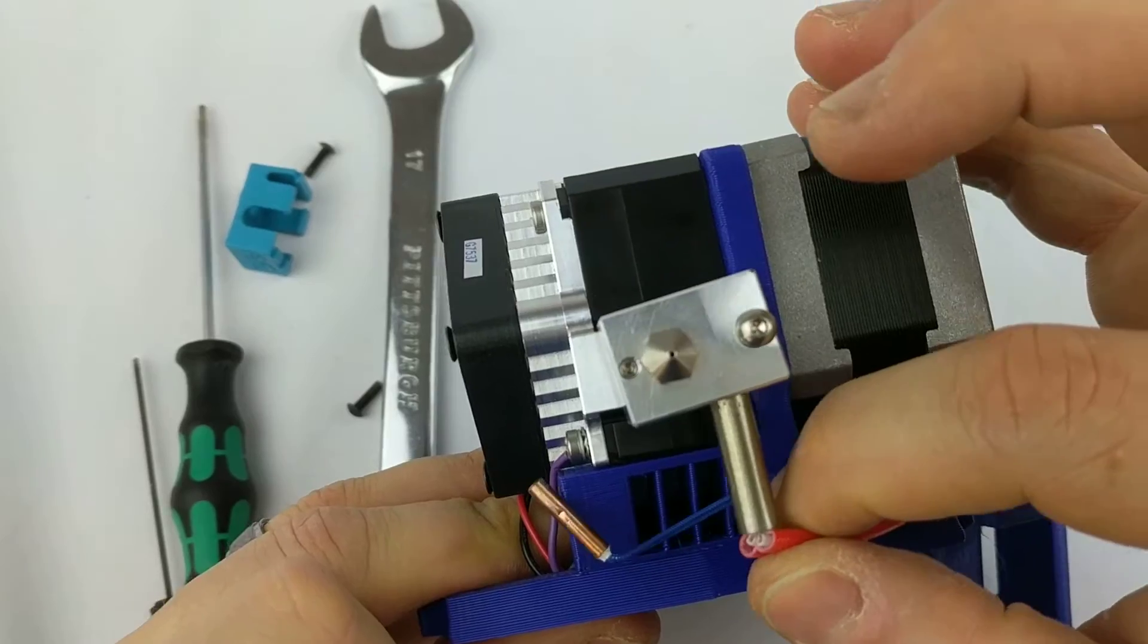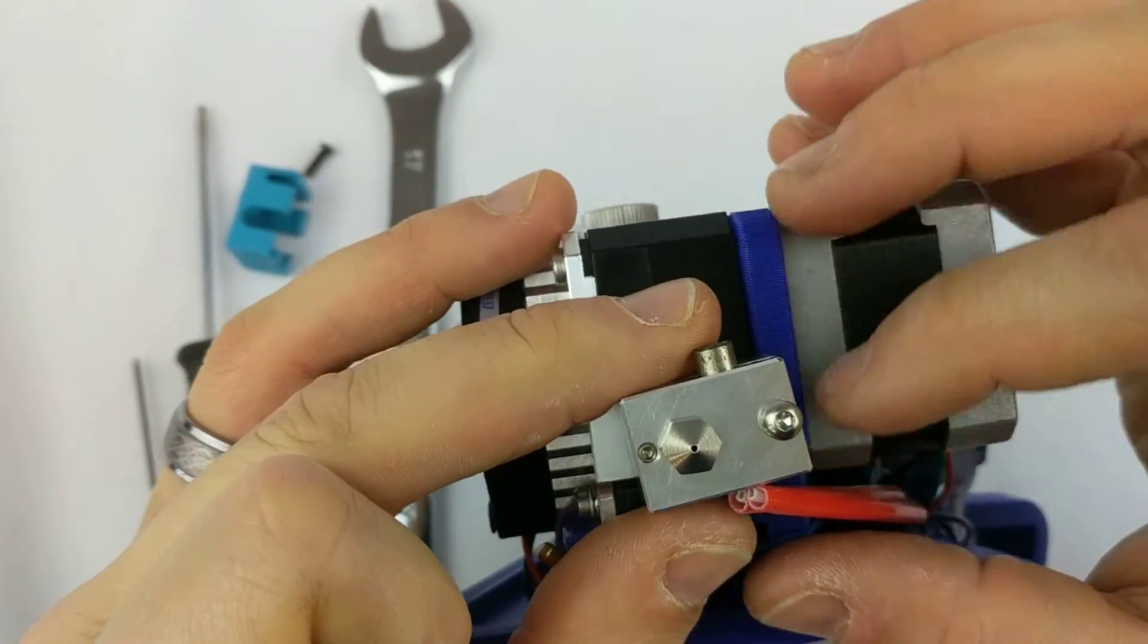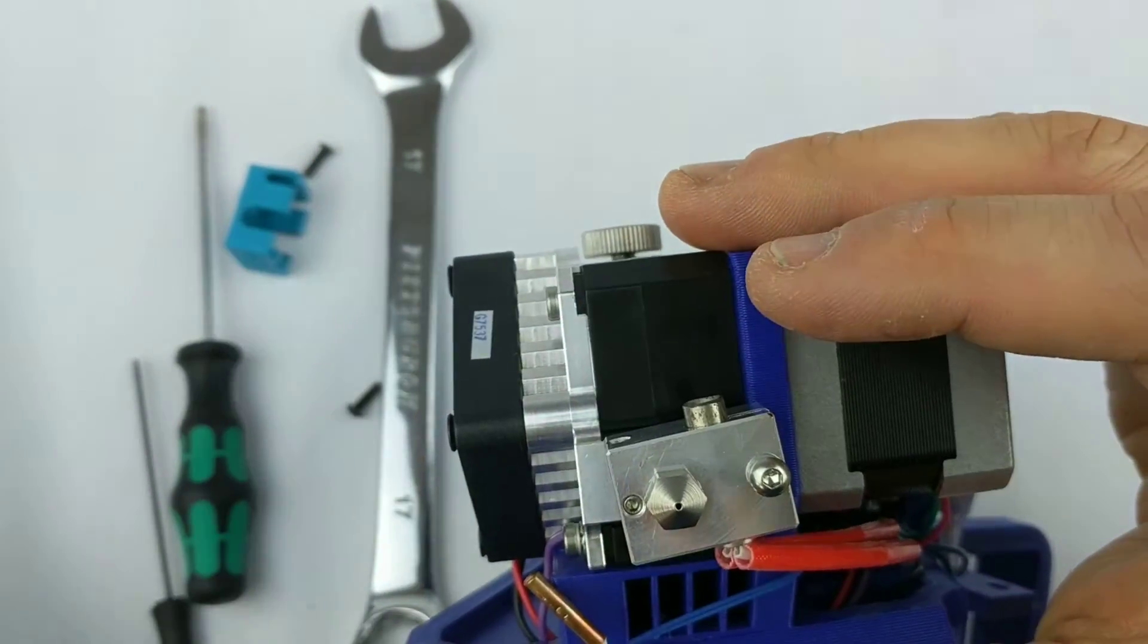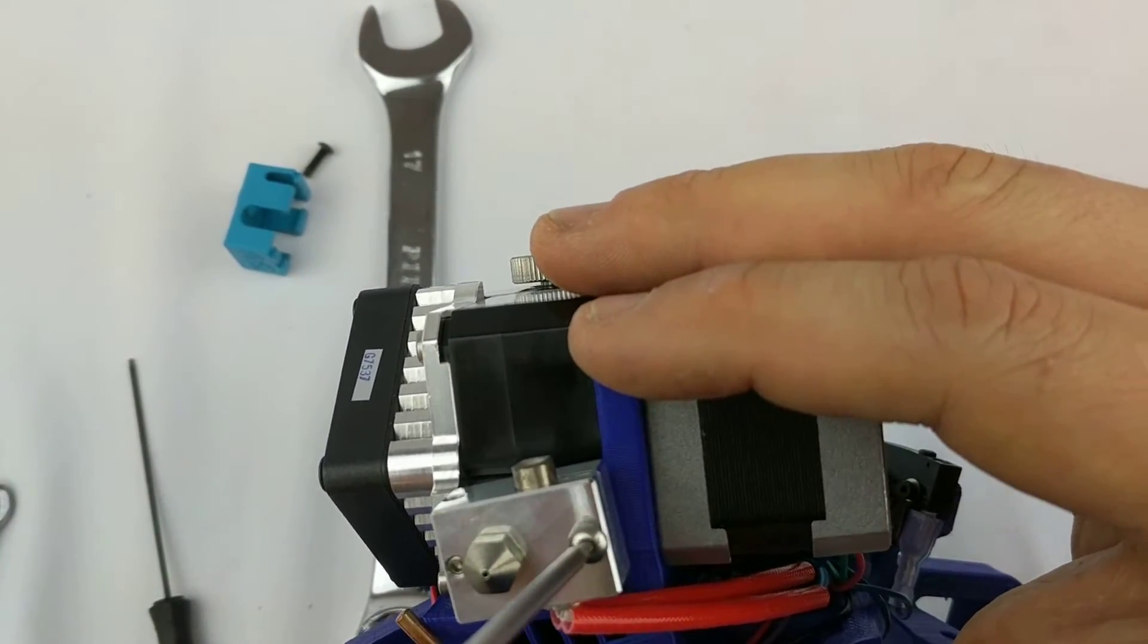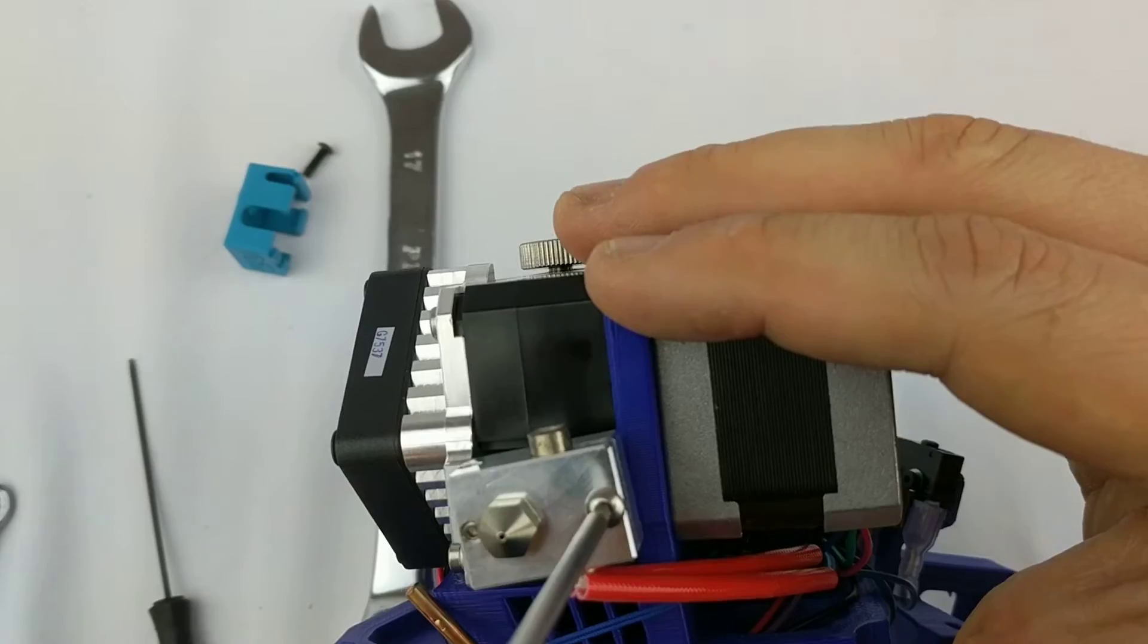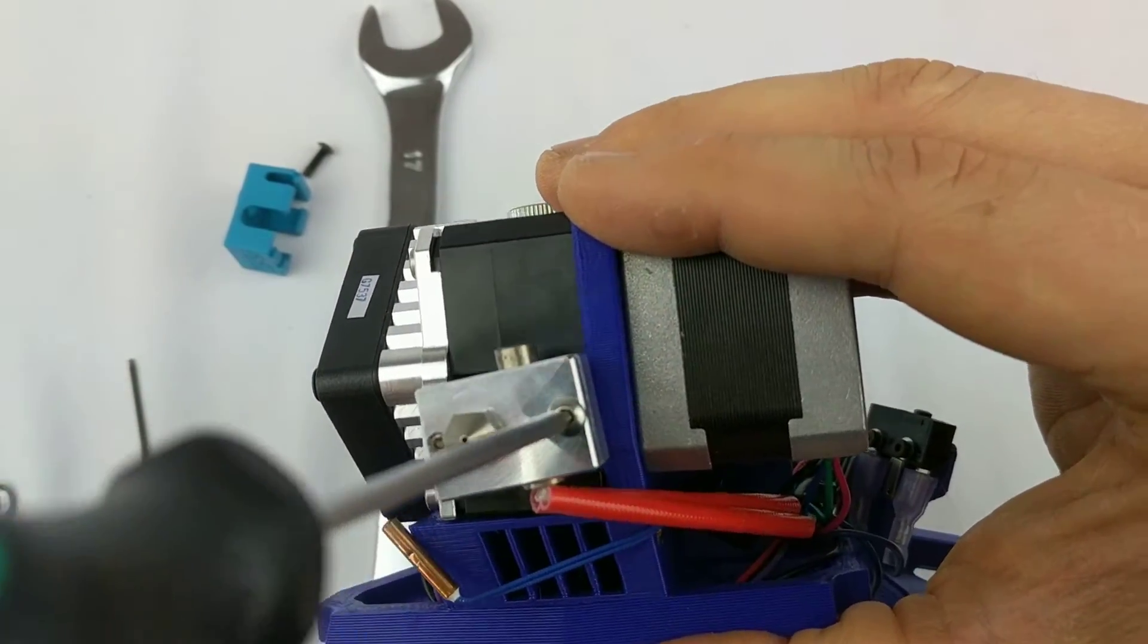I'll go ahead and reinsert the heater. In our case, we have to leave a little bit of a gap right there to line it up. Tighten up the hex screw there.